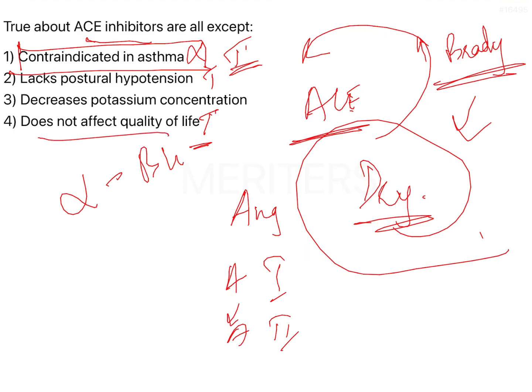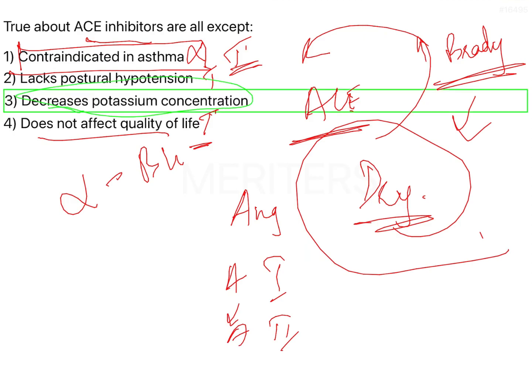That brings us to option number 3, which is the false statement. It says it decreases potassium concentration - this is wrong. ACE inhibitors actually increase the potassium concentration.